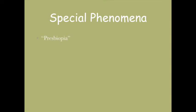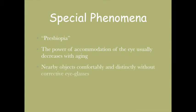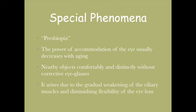Now let's discuss a special phenomenon called presbyopia. It says that the power of accommodation of the eye usually decreases with aging, so nearby objects cannot be seen comfortably and distinctly without corrective eyeglasses. It arises due to gradual weakening of the ciliary muscles with age.